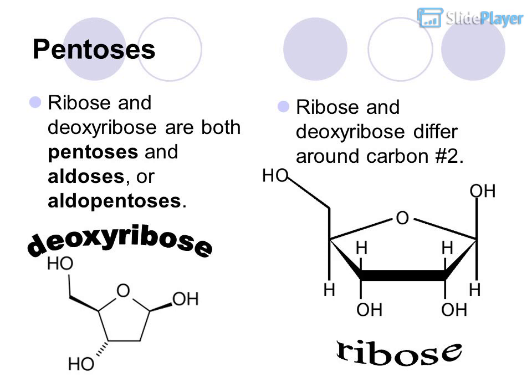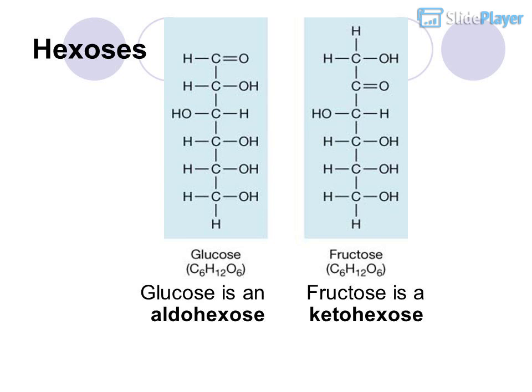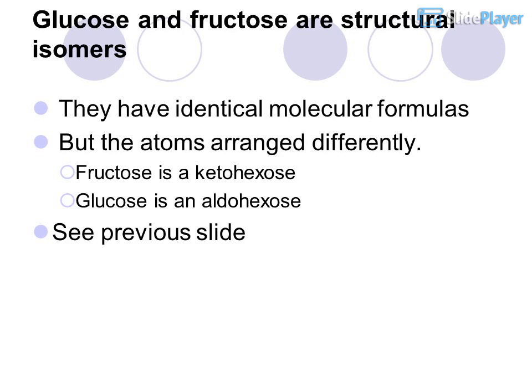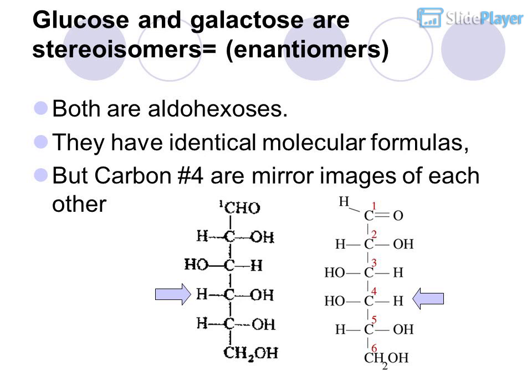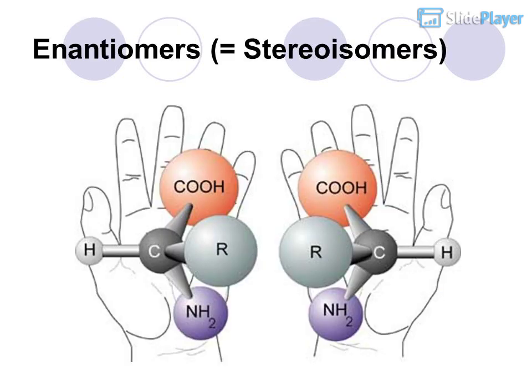Hexoses: Glucose is an aldohexose and fructose is a ketohexose. Glucose and fructose are structural isomers — they have identical molecular formulas but atoms arranged differently. Glucose and galactose are stereoisomers (enantiomers). Both are aldohexoses with identical molecular formulas, but carbon number 4 is a mirror image of each other, making them enantiomers.